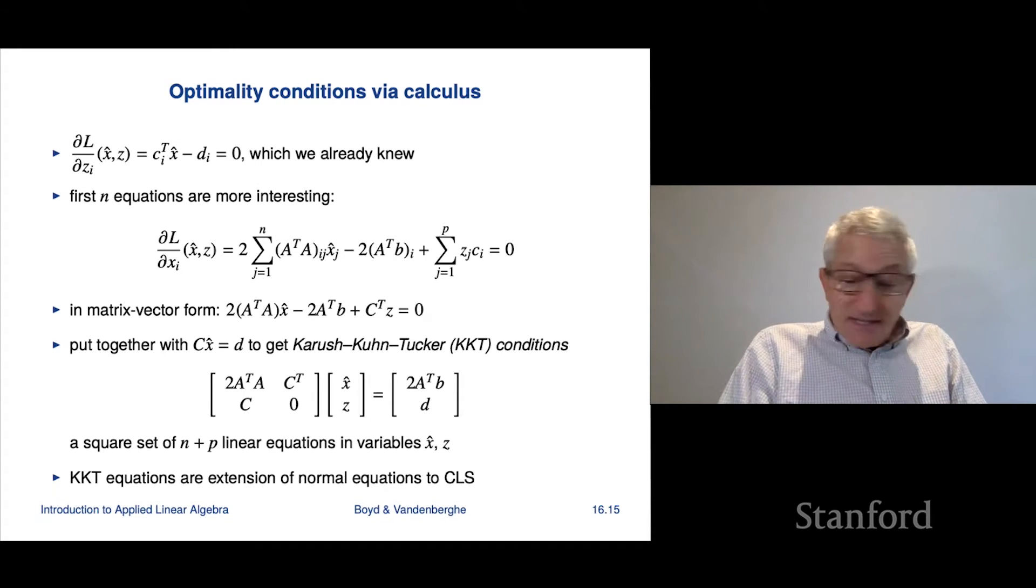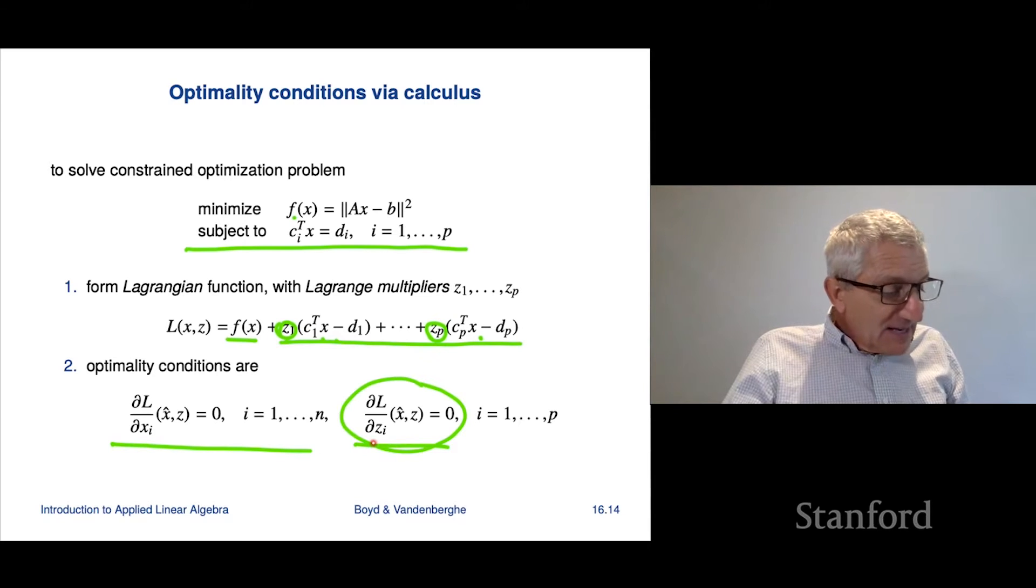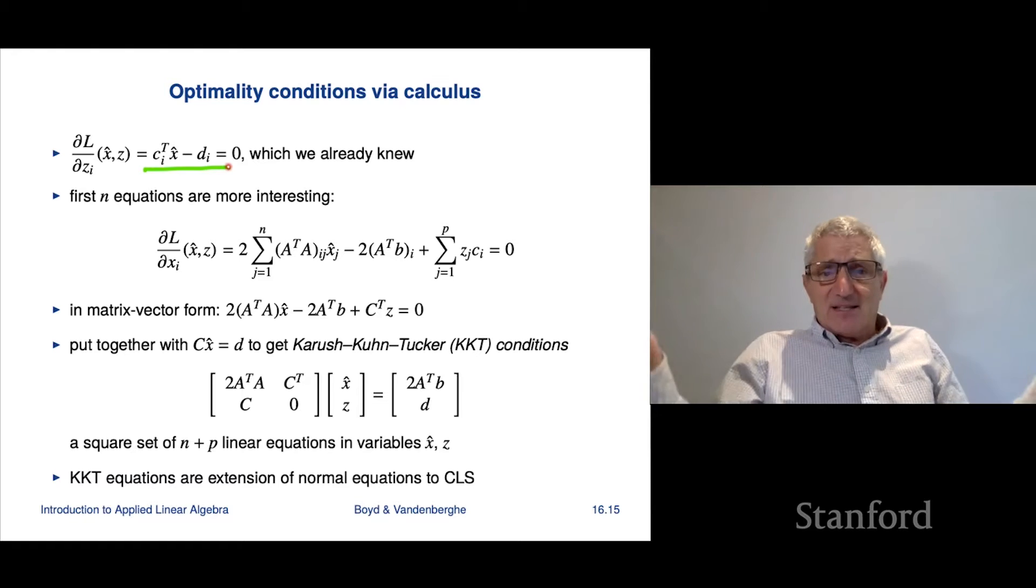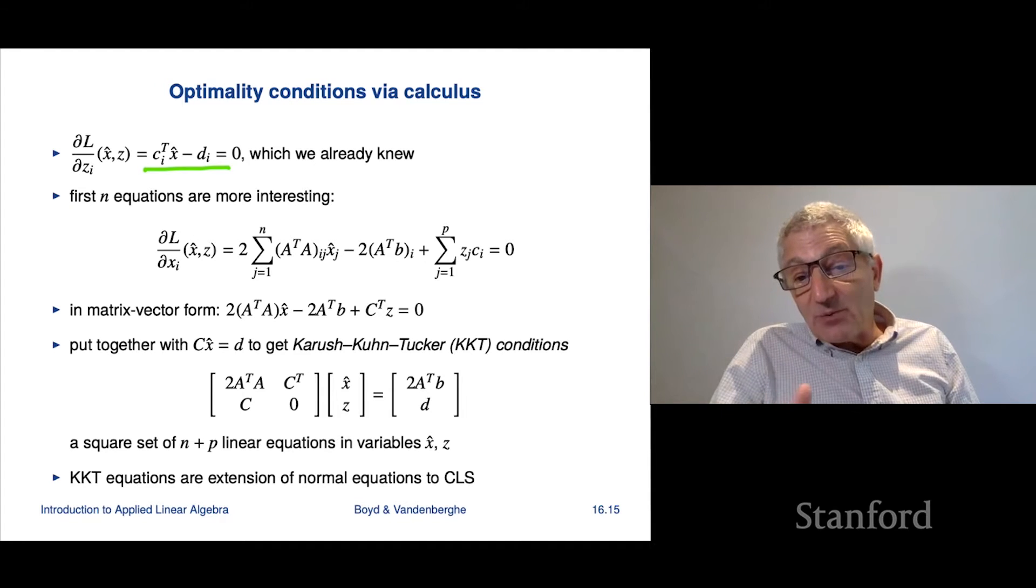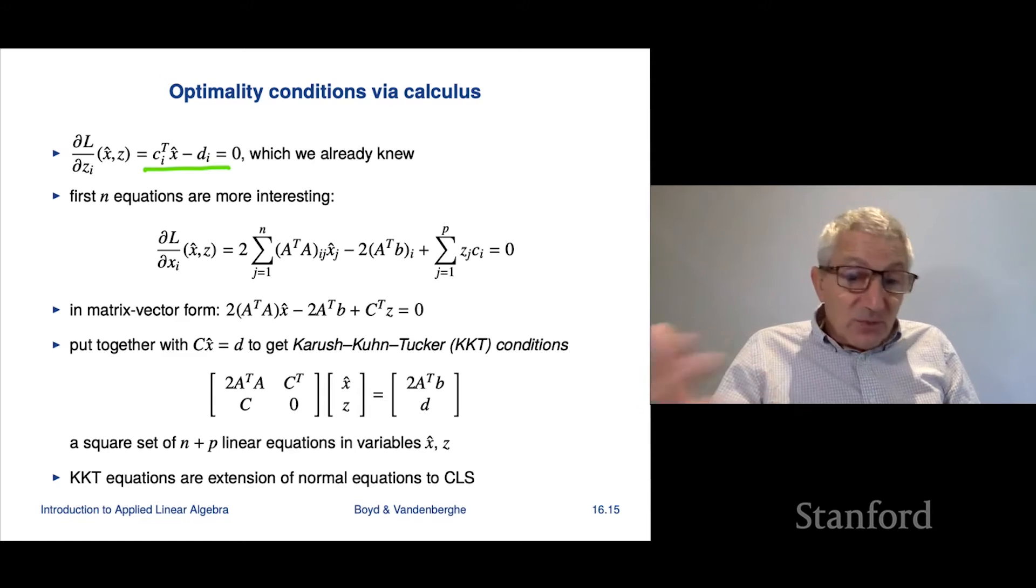So let's look at these conditions. Well, the first one says I should take the partial—the second one, I should say, takes the partial derivative with respect to zi and set it equal to 0. And if I take the partial derivative with respect to say z1, I simply get c1 transpose x minus d1 is 0. So I get these. But we knew that, right? That's the constraint. So the second group of equalities, the partial derivative of L with respect to the zi's, is just basically reaffirming that we have to choose something that is feasible.